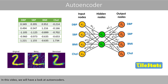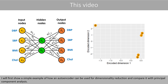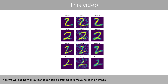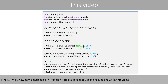In this video, we will have a look at autoencoders. I will first show a simple example of how an autoencoder can be used for dimensionality reduction and compare it with principal component analysis. Then we will see how an autoencoder can be trained to remove noise in an image. Finally, I will show some basic code in Python if you like to reproduce the results shown in this video.